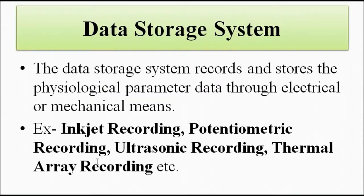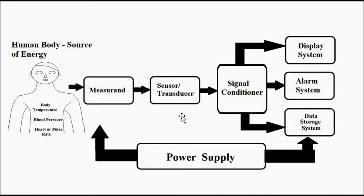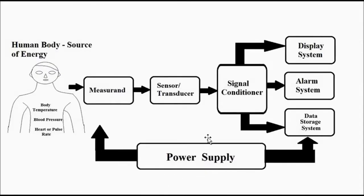We have now discussed all the blocks of this biomedical measurement system — the measurement, the sensor and transducer, the signal conditioner, the display system, alarm system, and data storage system. Finally, there is the power supply, which provides the necessary voltage and power to each individual block for proper functioning. It can be a regulated power supply of any value such as 5V, 12V, or higher, depending on the requirement.